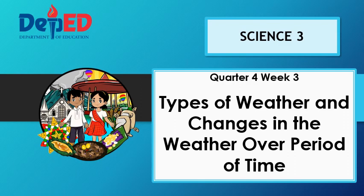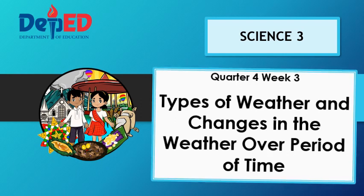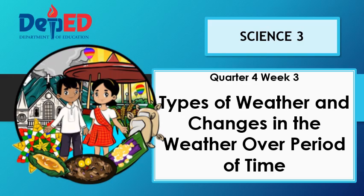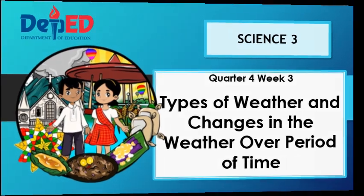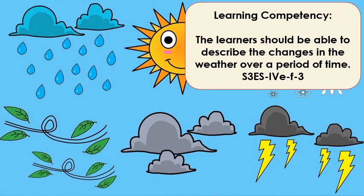Science 3, Quarter 4, Week 3. Types of weather and changes in the weather over a period of time. This is our lesson for today. Learning competency with code: the learners should be able to describe the changes in the weather over a period of time.